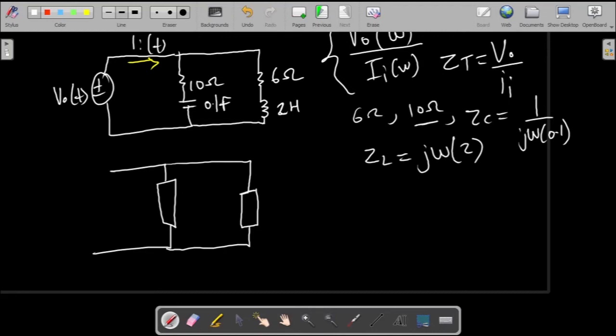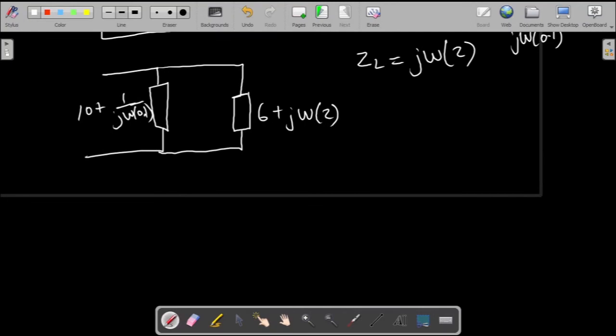So now we can say we can take ten plus the impedance of the capacitor, which would be this one. Then for this one we're going to have six plus the impedance of the inductor, which is something like that.